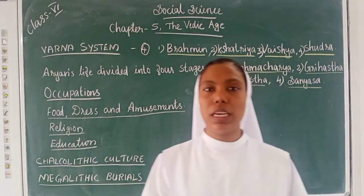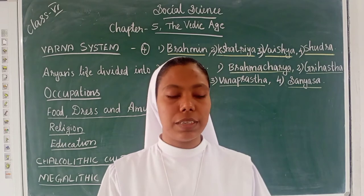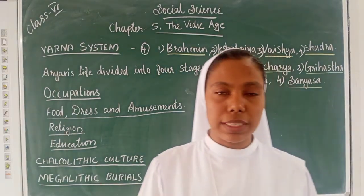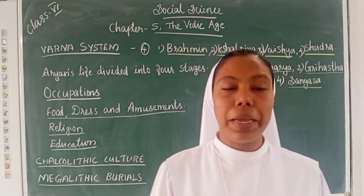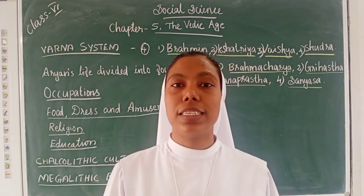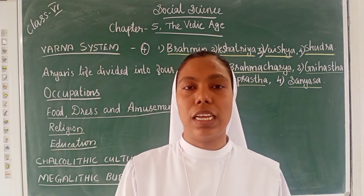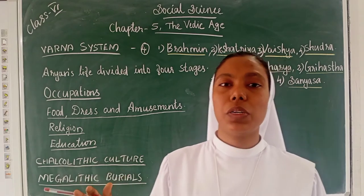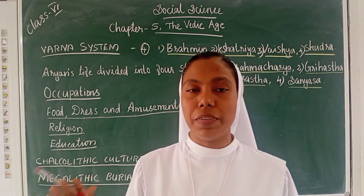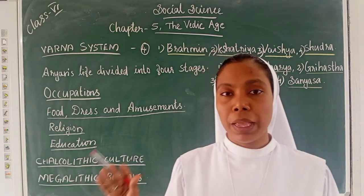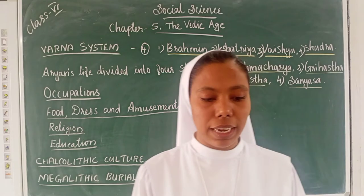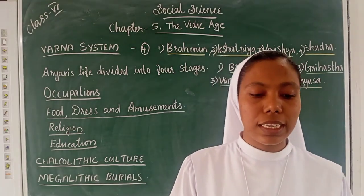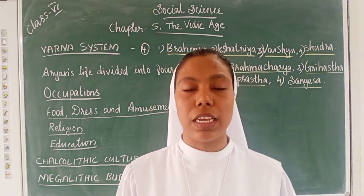When discussing the Varna system, we can say that the Aryan society was divided on the basis of Varna. The word Varna means skin color. The Aryans considered themselves fair-skinned and looked down upon the dark-skinned people, called Dashas, as inferior.